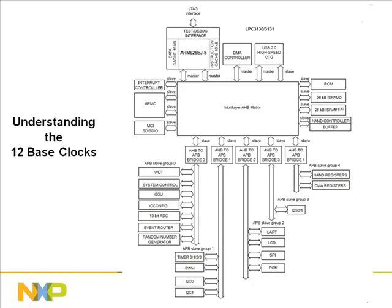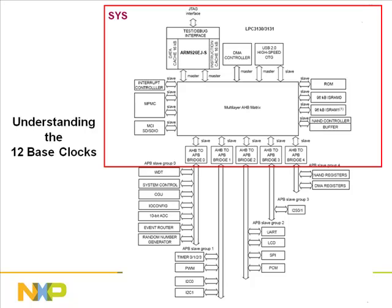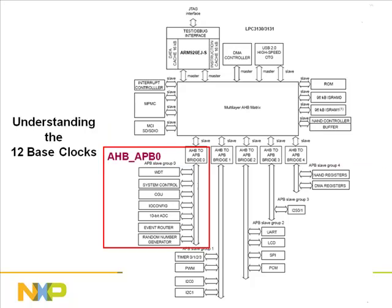The 12 base clocks spread across the system. The SYS base clock is the most important — it provides the core AHB clock to the AHB matrix, internal memories, and external memory interface. The APB0 base clock provides APB clock to the event router, ADC, system registers, and random number generator. The APB1 base clock provides clock to general purpose timers, PWM, and I2C.